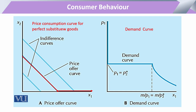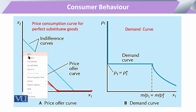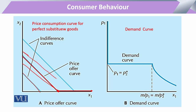When we draw this curve, we see various indifference curves available to the consumer. For perfect substitutes, these indifference curves have corner solutions with the budget line. As the budget line changes, the consumer moves from one corner point to another, and joining all these points of quantity demanded with respect to price gives us the straight-line price consumption curve.